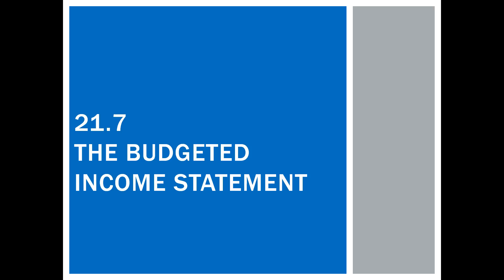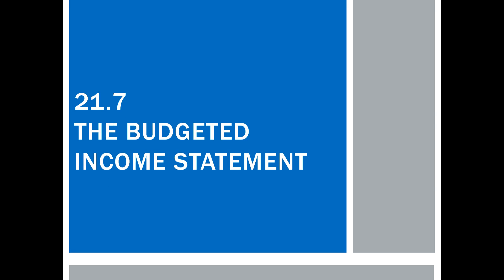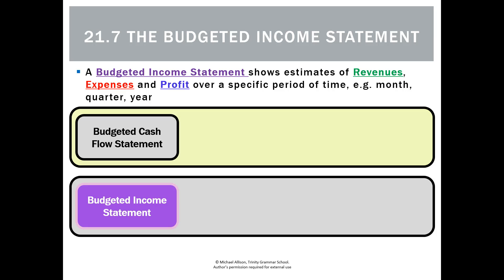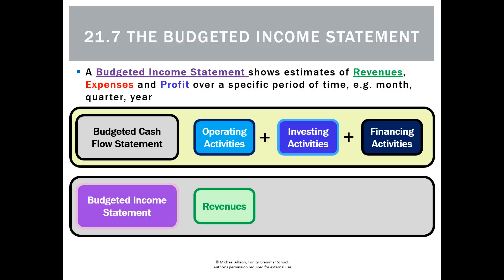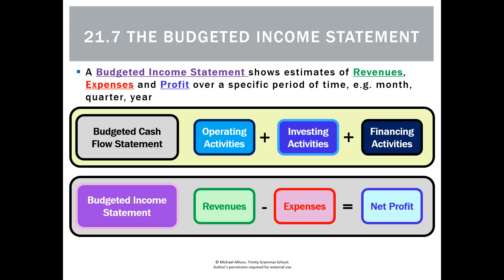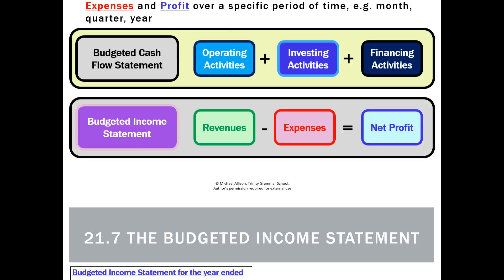The next report we need to budget for is the budgeted income statement. We've already done the cash flow statement, which covers inflows and outflows from operating, investing and financing activities. The budgeted income statement is simply our future estimates of revenues earned and expenses incurred, to arrive at what we think our net profit will be.